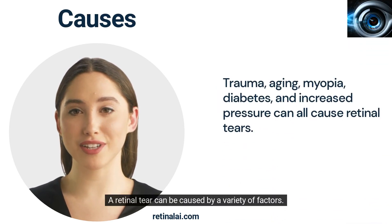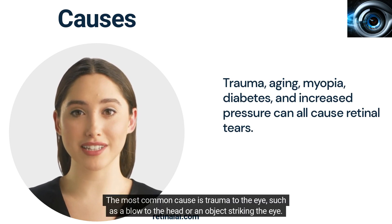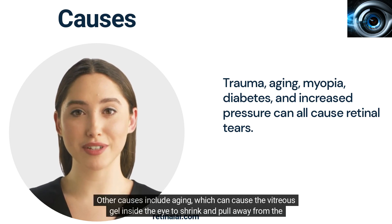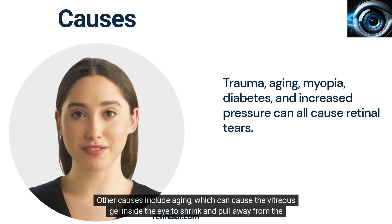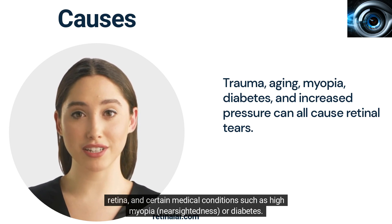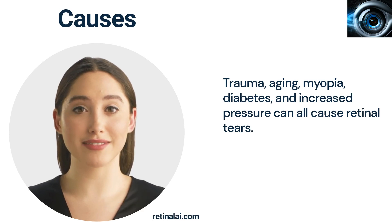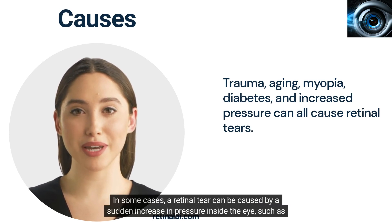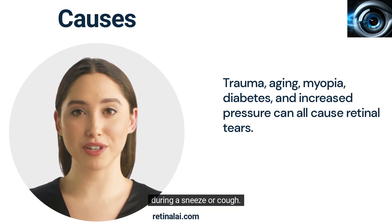A retinal tear can be caused by a variety of factors. The most common cause is trauma to the eye, such as a blow to the head or an object striking the eye. Other causes include aging, which can cause the vitreous gel inside the eye to shrink and pull away from the retina, and certain medical conditions such as high myopia, nearsightedness, or diabetes. In some cases, a retinal tear can be caused by a sudden increase in pressure inside the eye, such as during a sneeze or cough.